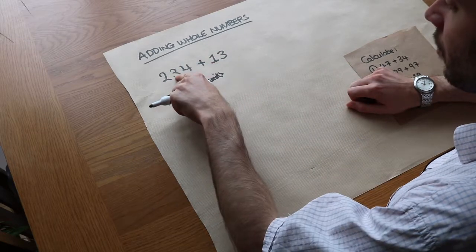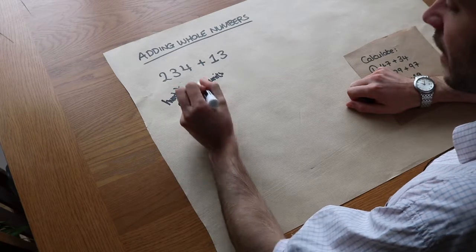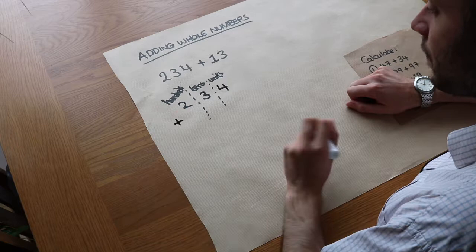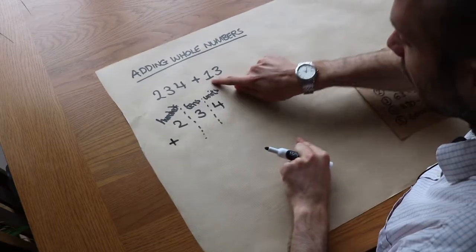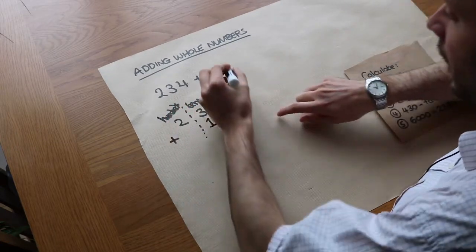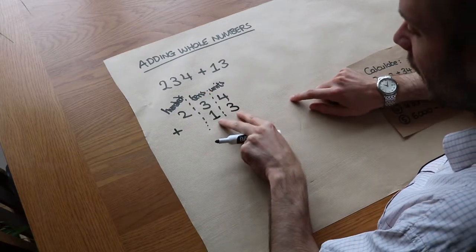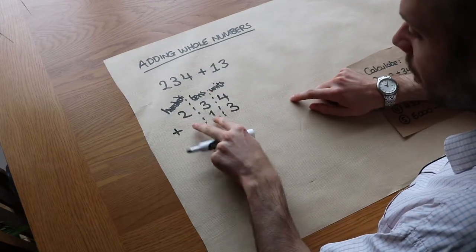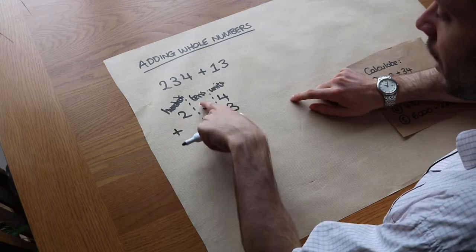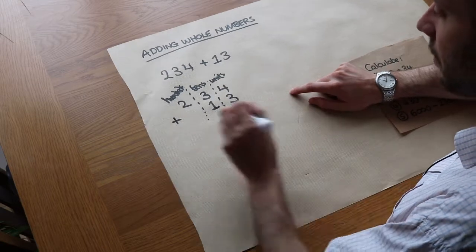So we've got 234 — that's 2 hundreds, 3 tens, and 4 units — and then we're adding 13, which is 1 ten and 3 units. I've seen students accidentally put the 13 misaligned, which would mean the 1 would be in the hundreds digit. You have to make sure that digits in the same column have the same place value.